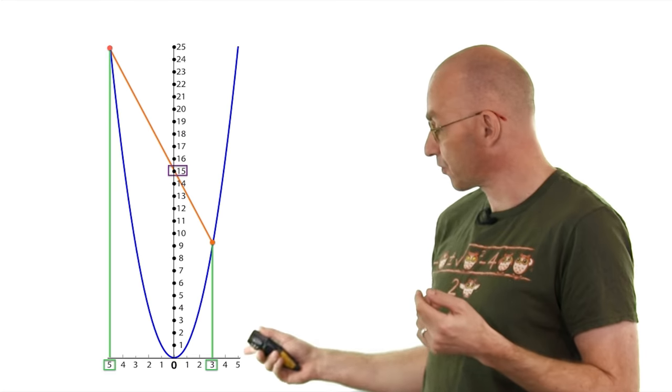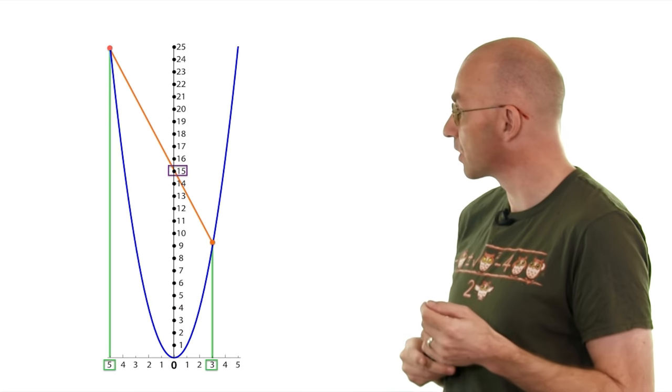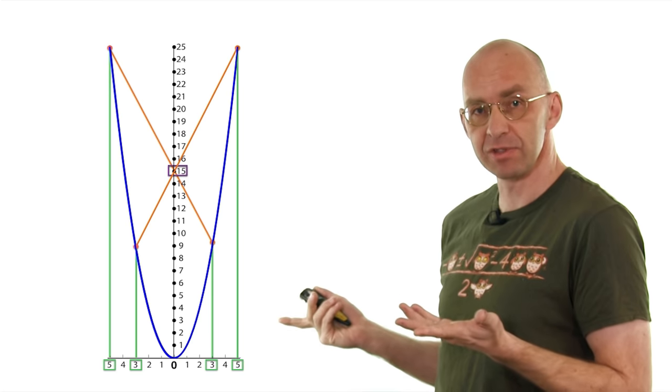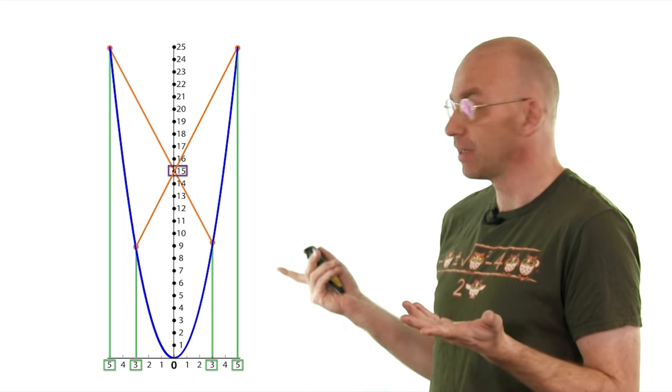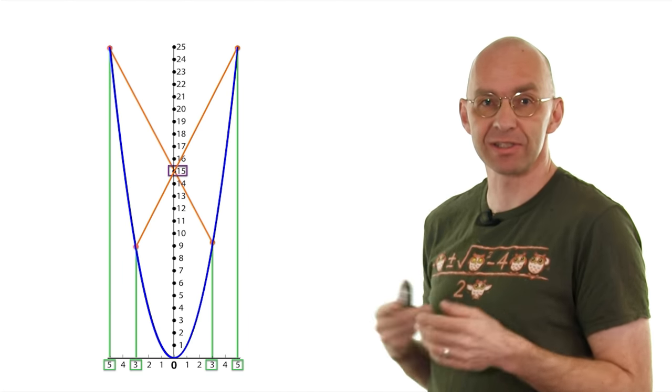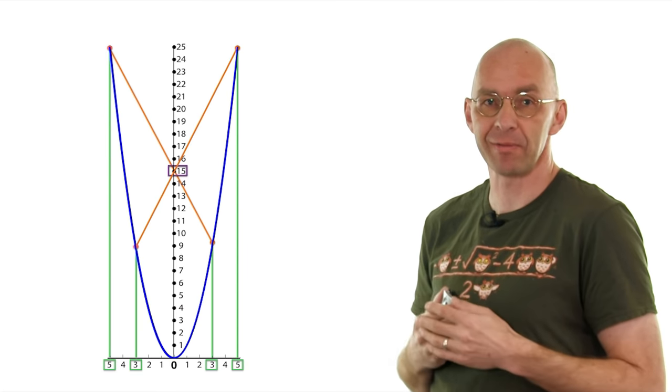What about the symmetry business? Well, 3 times 5 is 15. And now, 5 times 3 is 15, obviously. And you can really see that's got a lot to do with the symmetry of the parabola. It's very nice.